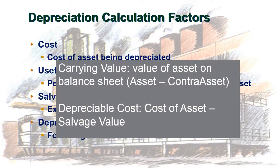A couple other important things: we need to know the carrying value, which is the value of the asset that's going to be on the balance sheet. You take the asset and subtract the contra asset associated with it. When talking about property, plant, and equipment, the contra asset is usually accumulated depreciation. We're also going to look at depreciable cost, which is the cost of the asset minus the salvage value — the value you expect the asset to go down by over the course of its useful life.